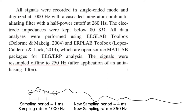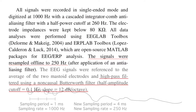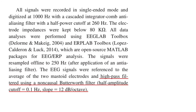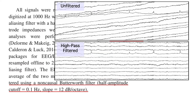Felix resampled the data offline to 250 Hz, which just made the data files smaller and the processing faster. A high-pass filter was then applied that filtered out signals below 0.1 Hz, which just gets rid of slow voltage drifts that mainly come from the skin.